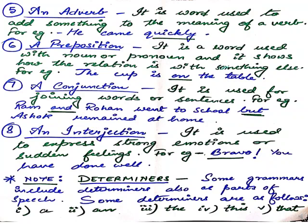Coming to the 6th point — a preposition. What is a preposition? It is a word used with a noun or pronoun and it shows the relationship with something else. For example, if I say 'the cup is on the table,' it is showing the relation of the cup with the table — where it is. On the table, under the table, above the table. So this is showing a relationship between two things.